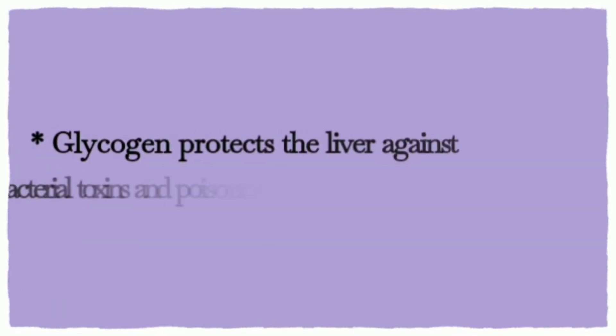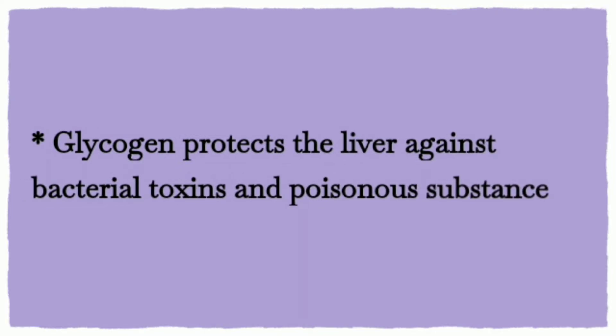Glycogen protects the liver against bacterial toxins and poisonous substances. In this way, carbohydrates play an important role in the protection of the liver.